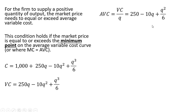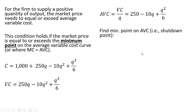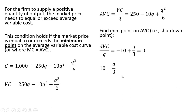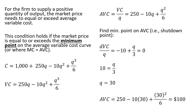To find the minimum point on average variable cost, we take its derivative with respect to output. The derivative of 250 is 0, the derivative of minus 10q is minus 10, and for the last term we bring down the 2, giving 2 divided by 6, which simplifies to 1/3, leaving q divided by 3. Setting that equal to zero and multiplying both sides by 3 gives q equals 30. So at 30 units of output, average variable cost is at its lowest point — plugging 30 into the AVC equation gives average variable cost equal to $100.